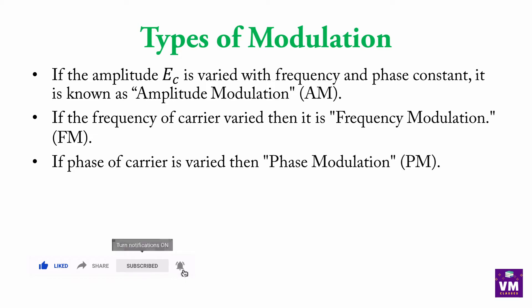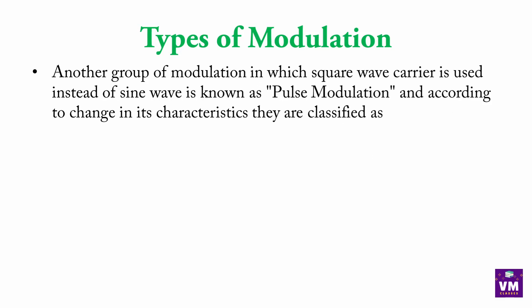Second type: if the frequency of a carrier wave is varied, then it is Frequency Modulation (FM). Third: amplitude, phase, and frequency are the three types when using a sine wave as a carrier wave. But if we use a square wave instead of a sine wave as the carrier, then it is known as Pulse Modulation.